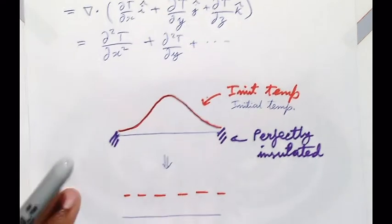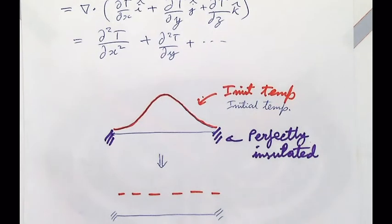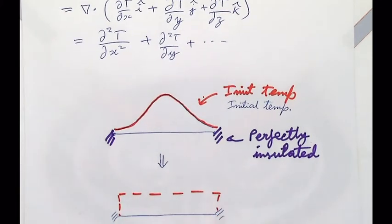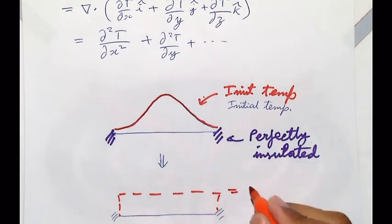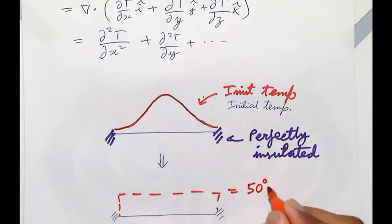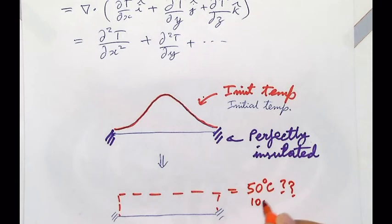Once the temperature profile is flat, it will not change in time. All of this we can relate to the differential equation. Without knowing differential equations, can we figure out what this final value is going to be? For that I need one more piece of information: the initial maximum temperature in the middle of the rod — let's say 1,000 degrees. Also the length of the rod.